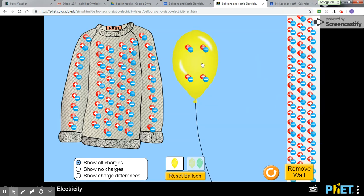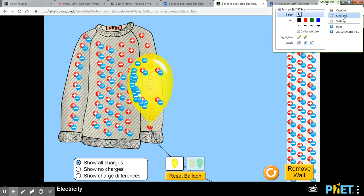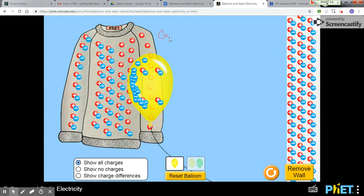By the way, whenever we charge the balloon against the sweater, electrons being transferred by rubbing the two things together. What is that called? Charging by friction.